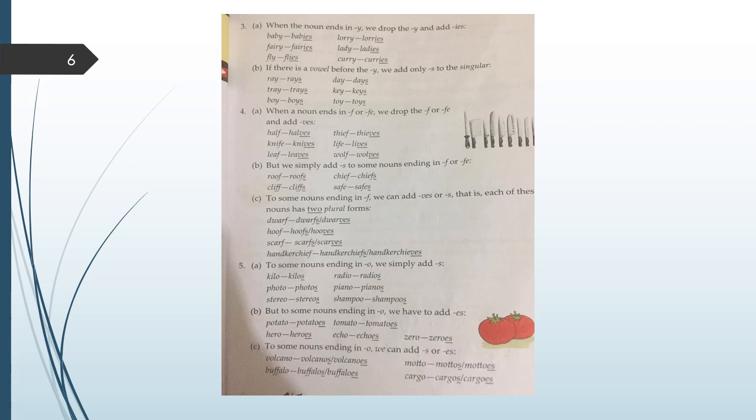To some nouns ending in O, we simply add S. Kilo, kilos. Photo, photos. Stereo, stereos. Radio, radios. Piano, pianos. Shampoo, shampoos. But to some nouns ending in O, we have to add ES. Like potato, potatoes. Hero, heroes. Tomato, tomatoes. Echo, echoes. Zero, zeros.